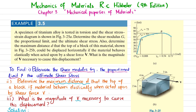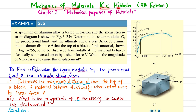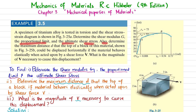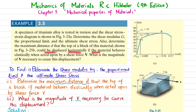In this video we are going to solve Example 3.5 from Chapter 3, Mechanical Properties of Material, from the book Mechanics of Materials by RC Hibbeler, ninth edition. The statement is: a specimen of titanium alloy is tested in torsion and the shear stress-strain diagram is shown in Figure 3-25a. Determine the shear modulus G, the proportional limit, and the ultimate shear stress. Also determine the maximum distance d the top of the block could be displaced horizontally if the material behaves elastically when acted upon by a shear force V, and what is the magnitude of V necessary to cause this displacement.